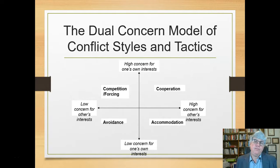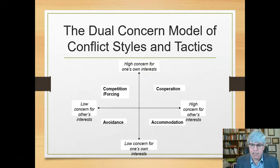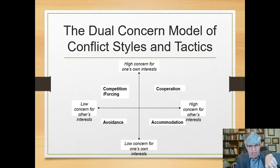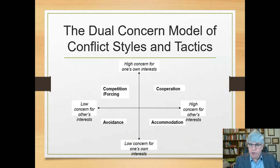These two dimensions create four quadrants that describe the type of conflict style we have in a given context, or how we habitually act. Starting with low concern for others' interests and low concern for my own interests — if I don't think what they want is important and I don't think what I want is important, it's just not worth it. We're going to avoid talking about it. That would be avoidance.